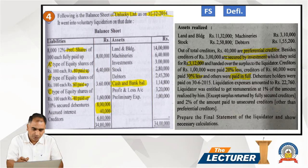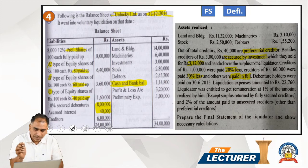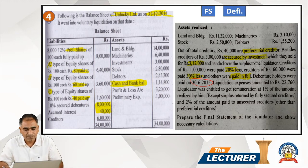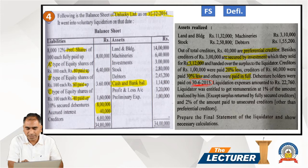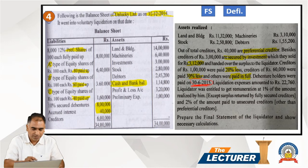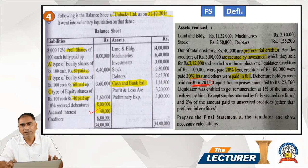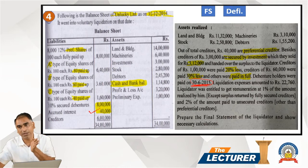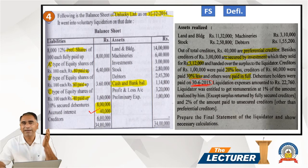The debentures are to be repaid on 30th June. Our liquidation date is 31st December, so payment to debenture holders is happening six months late. Therefore, we will pay six months' delay interest — but only provided the company is solvent, meaning after paying all outside liabilities, if something remains, then this delay interest will be paid. Solvent means: after paying outside liabilities, if something is left over, the company is considered solvent and delay interest becomes payable.